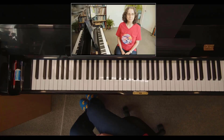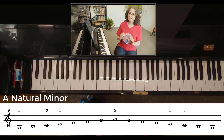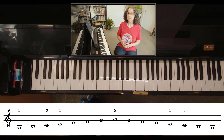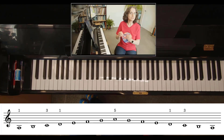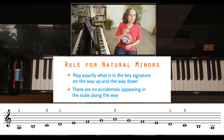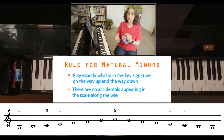Let's begin with the natural minor. I've chosen A minor because it's a nice, simple key to work with. A minor has nothing in the key signature, and as you can see, there are no accidentals occurring along the way in the scale — in other words, there aren't any sharps, flats, or naturals appearing before any of the notes. This basic, unaltered form of a minor scale is called the natural minor. The rule is: you play exactly what's in the key signature on the way up and the way down, and there are no accidentals occurring along the way.